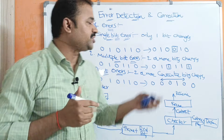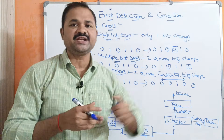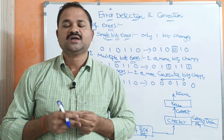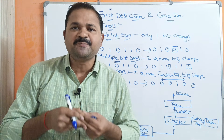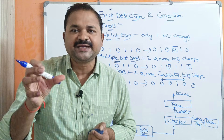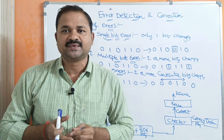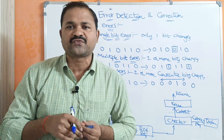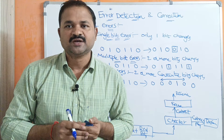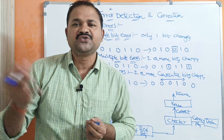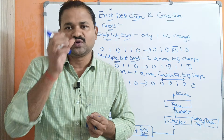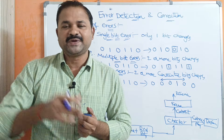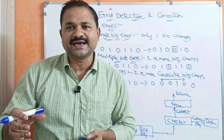Let us discuss error detection and correction. We know that sender sends a message to the receiver. During transmission, there may be a possibility that some bits of the frame will be corrupted. Corrupted means changed — we know that a frame is a combination of zeros and ones, so few zeros will be converted to ones and few ones will be converted to zeros. So the sender sends one message whereas the receiver receives another message because of frame corruption. This is called an error.